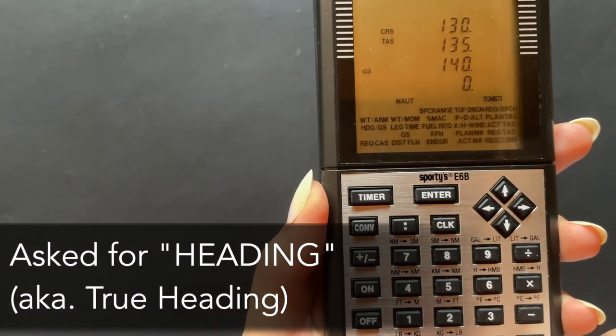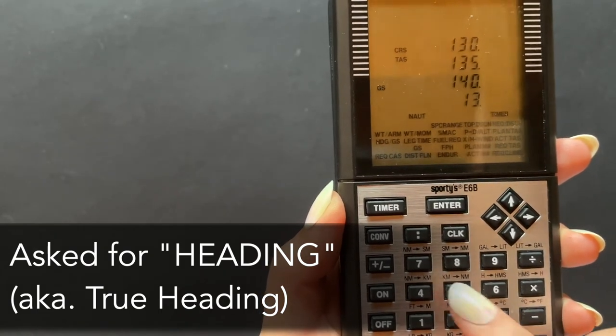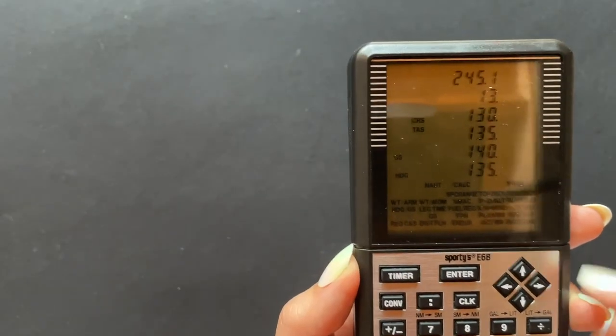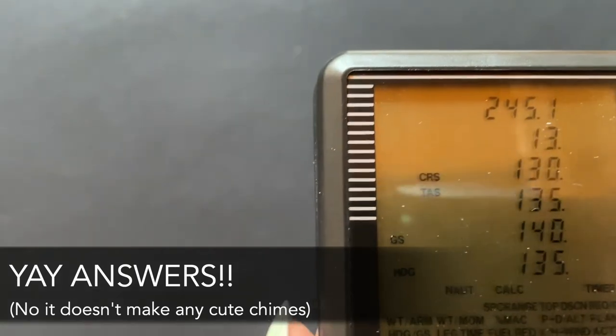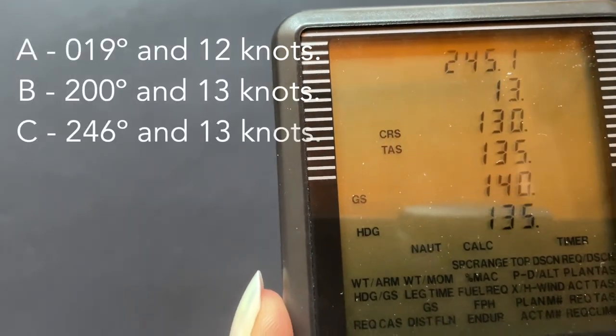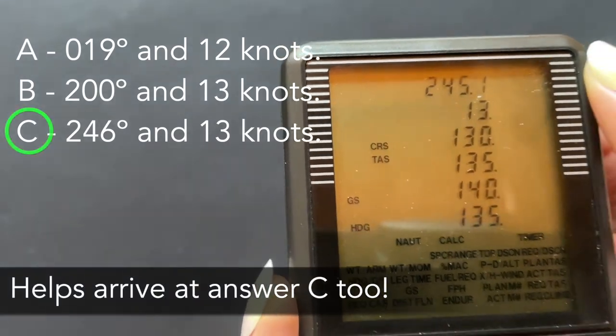Now it wants our heading, as in our true heading given in our question. 135, press enter. And then, up at the top, it gives us a wind direction of 245.1 and a speed of 13 knots. This also brings us to choosing the best answer option of answer C.